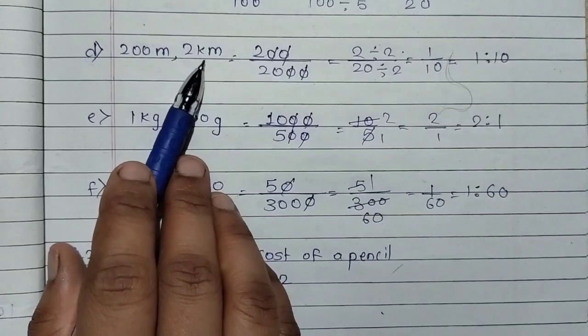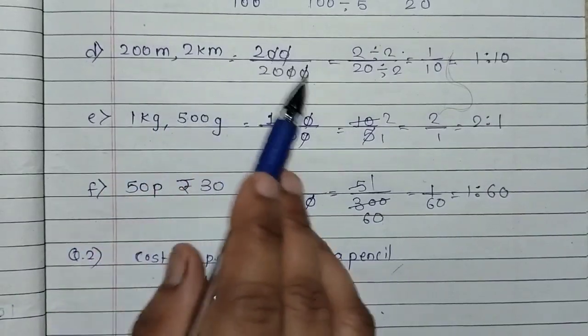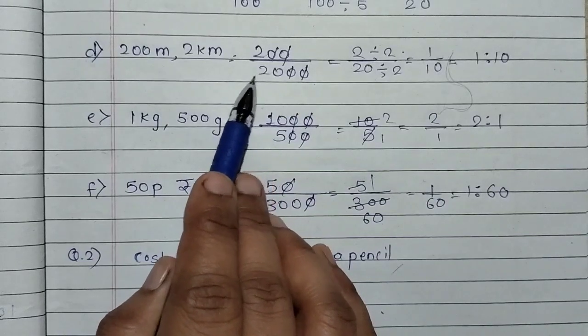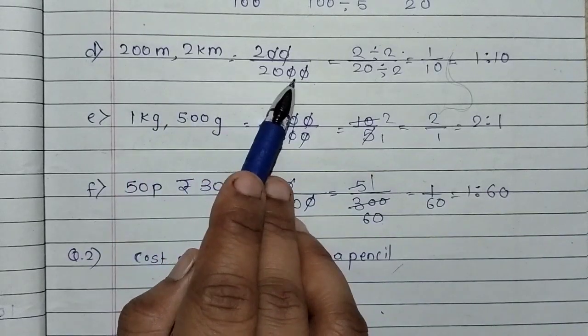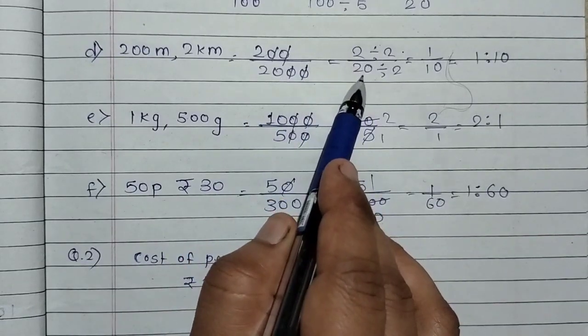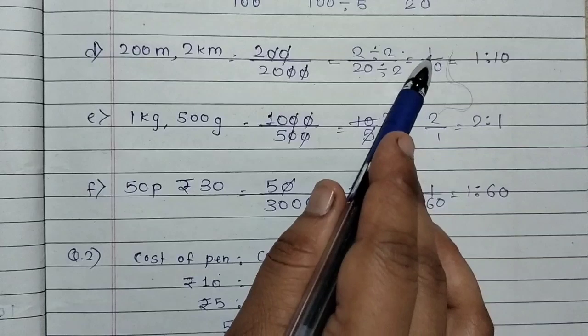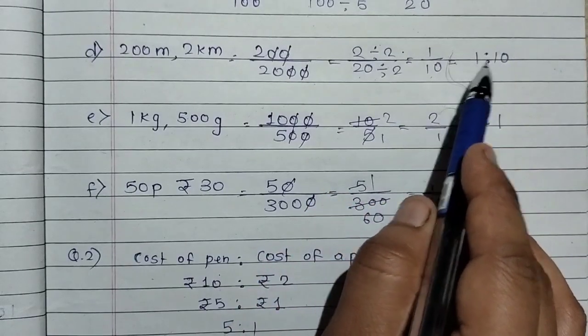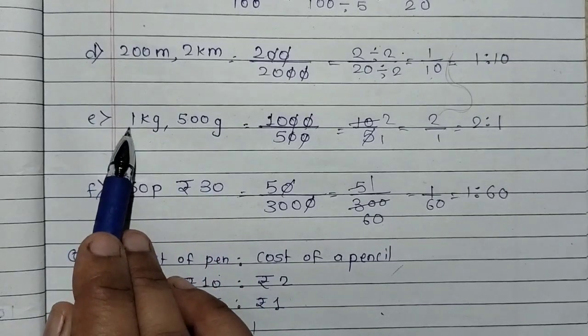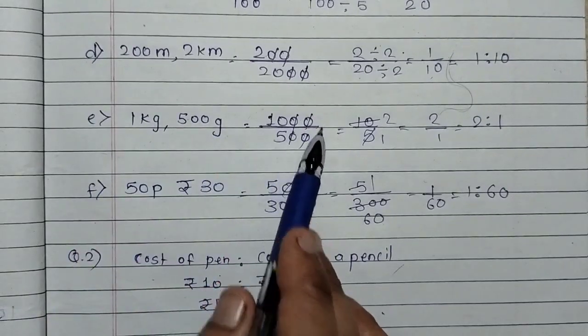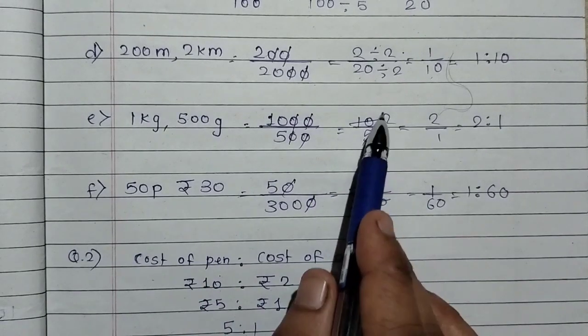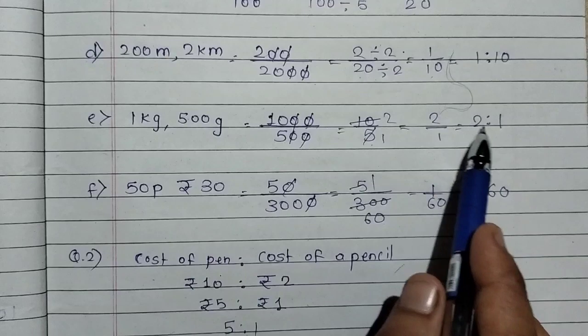Now look at meter and kilometer. You will convert to the same unit. So this is 200 meters as it is. And 1 kilometer equals 1000 meters. So 2 kilometers equals 2000 meters. So this is 200 upon 2000, zeros cancel. What will be 2 upon 20? 2 divides both, so we get 1 is to 10. Here we have kg and gram. So we will convert 1 kg to 1000 gram. So zeros cancel, we'll get 10 upon 5. 5 divides both, 5 into 1 is 5, 5 into 2 is 10. So we get 2 is to 1.